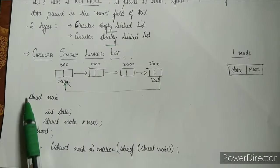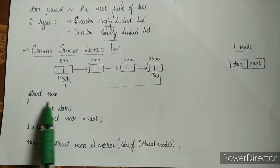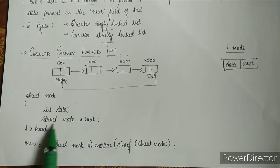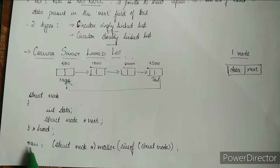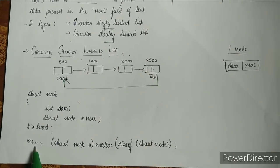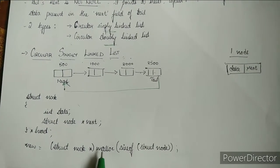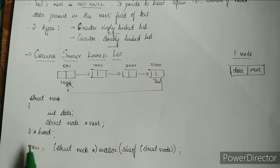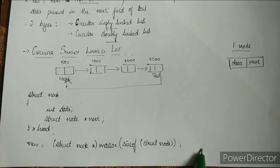We use struct because it's a collection of different data types. The structure is: struct node, with fields int data and struct node* next. Then we declare head. We allocate memory to a new node using dynamic memory allocation: new = (struct node*) malloc(sizeof(struct node)).